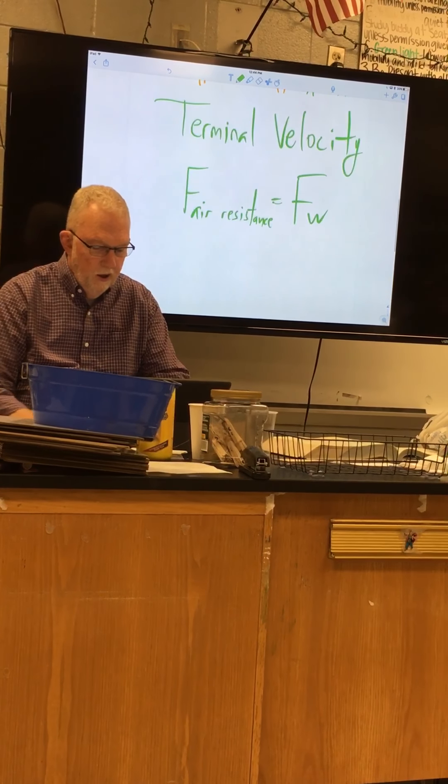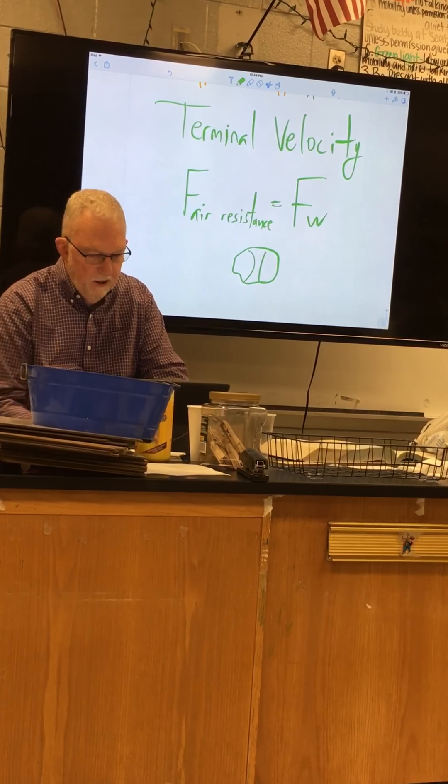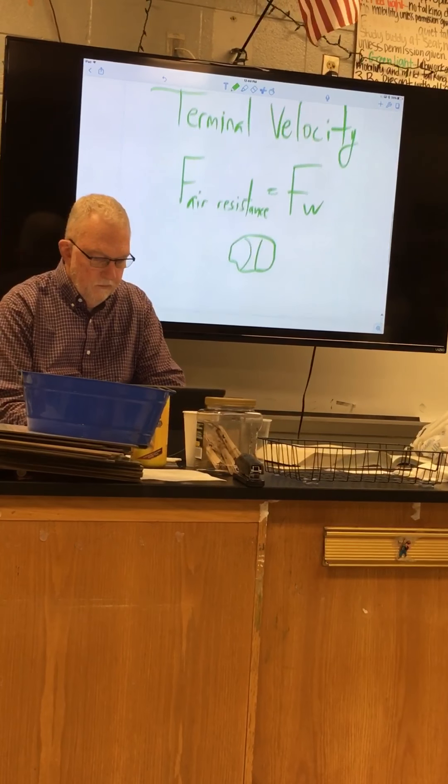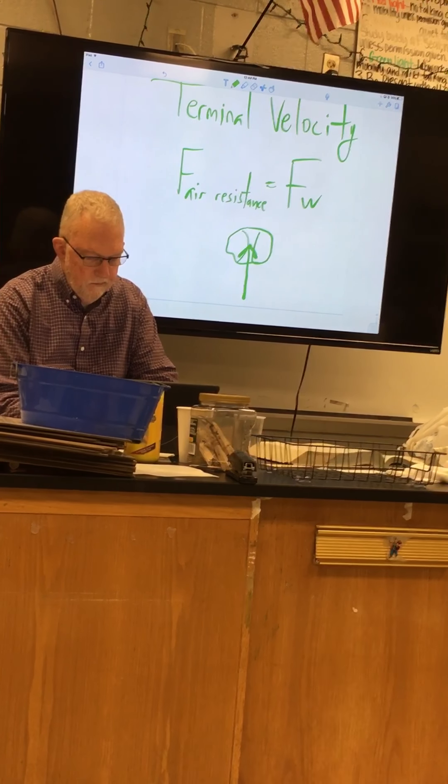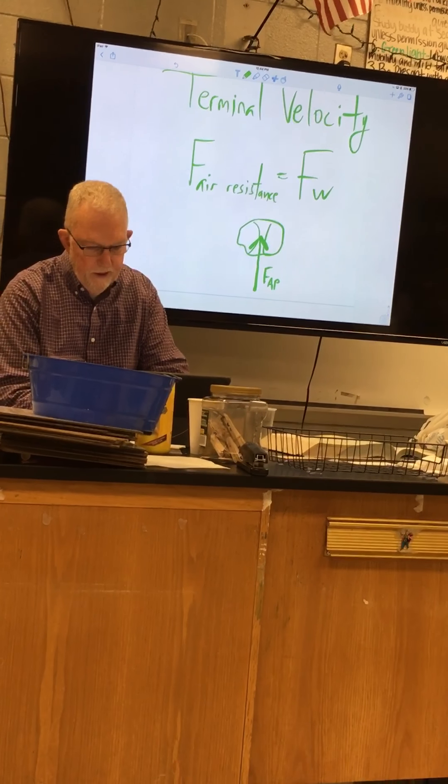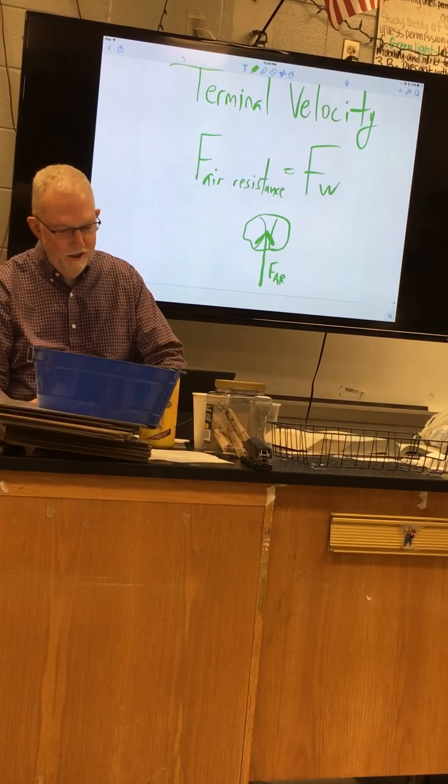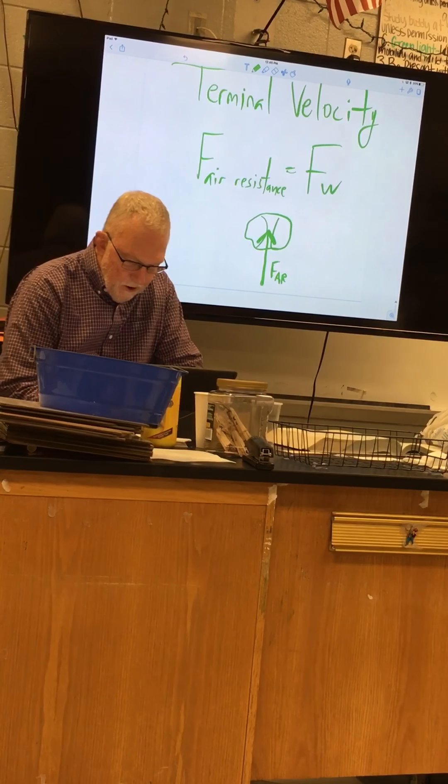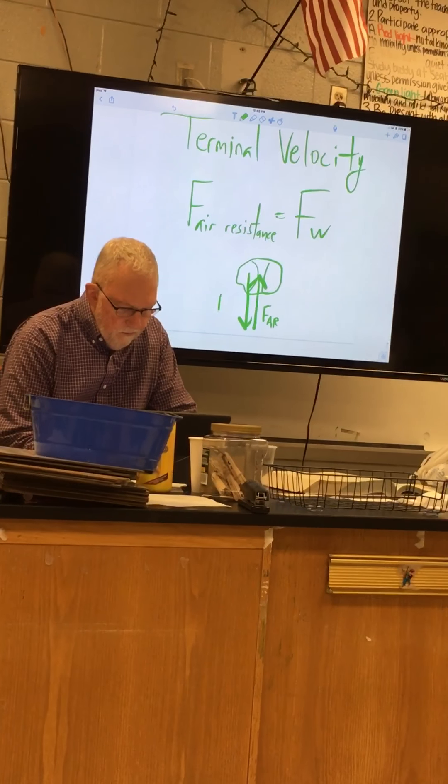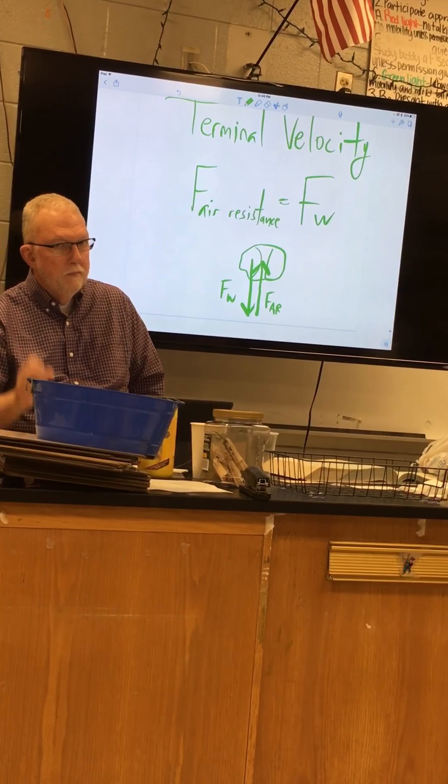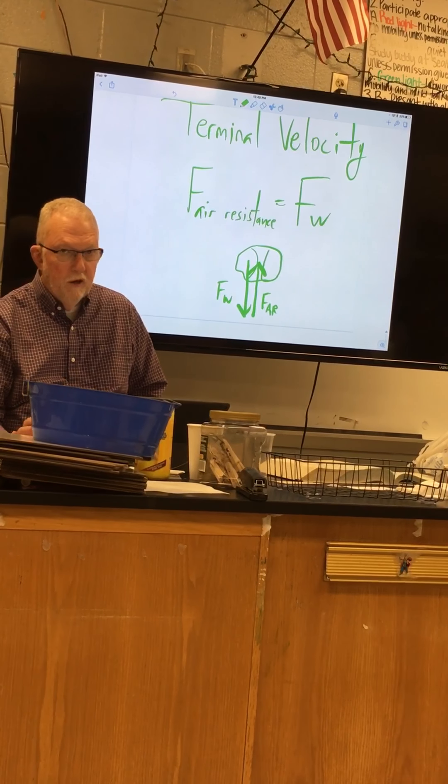So in this scenario, if you have like a basketball or baseball in free fall, air resistance is pushing up. I'll call it FAR - force of air resistance. Force of air resistance is equal to the weight. When these forces are exactly equal - opposite in sign, same in magnitude - then you'll have terminal velocity.